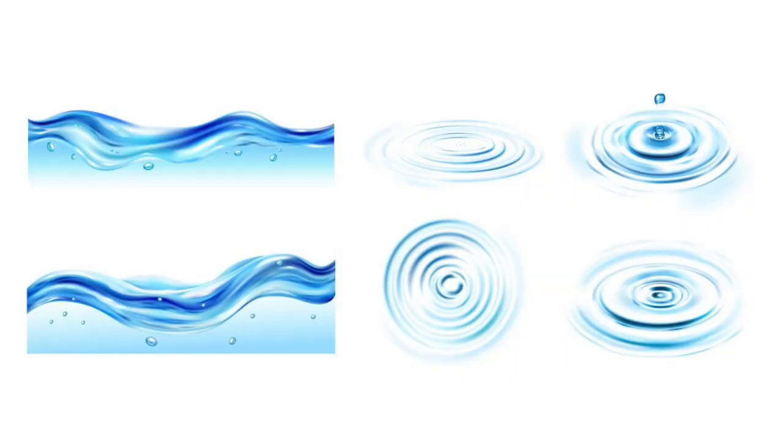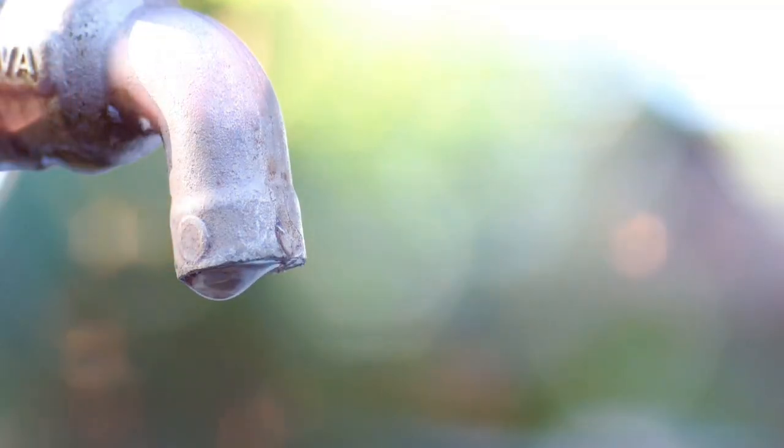As the stone strikes the water, it pushes the water down and out of the way. This leads to a crest, or high point, forming in a circular pattern around where the stone struck the water, followed by a trough, or low point, behind it.